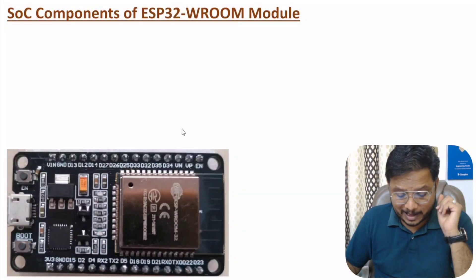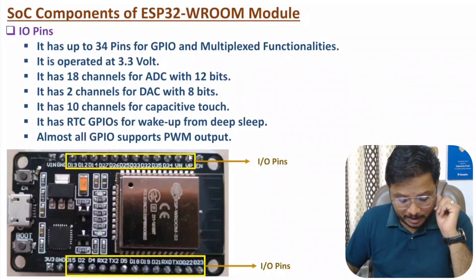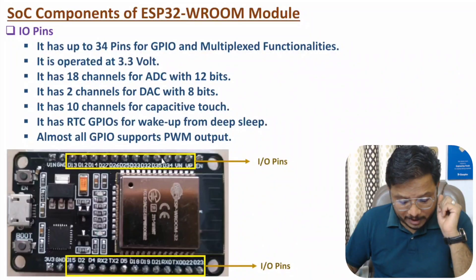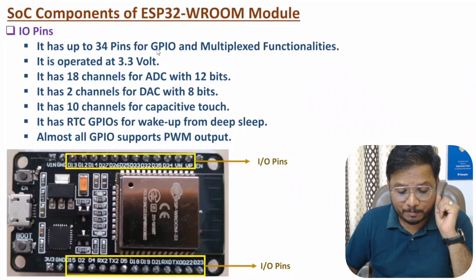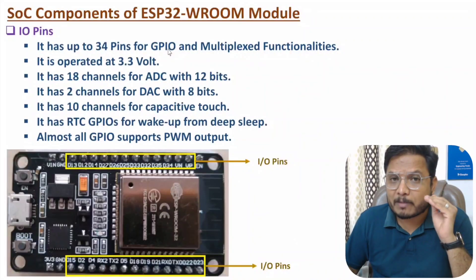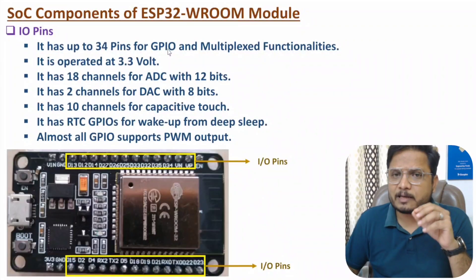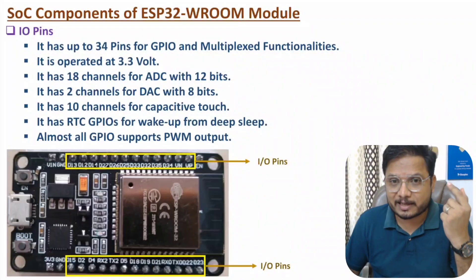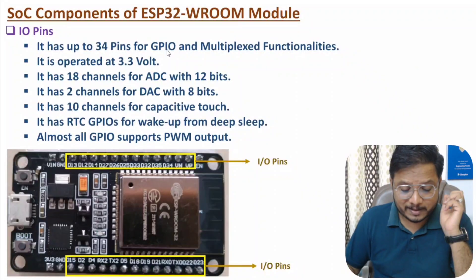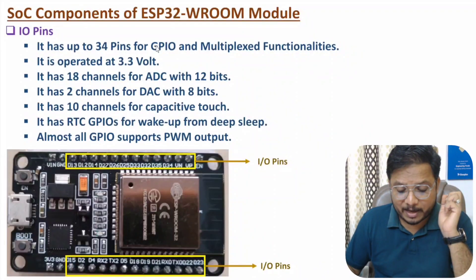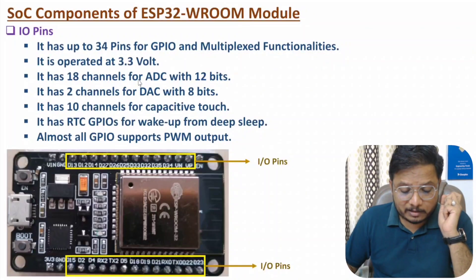Now let me discuss about the next SoC component, that is IO pins. You can observe here I have shown around 31 IO pins, but this processor can handle up to 34 GPIO pins. All these pins are multiplexed, meaning each of these pins has multiple functionalities. All these pins are operated at 3.3 volts.